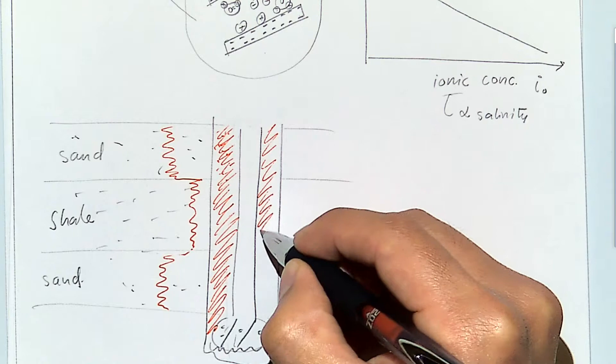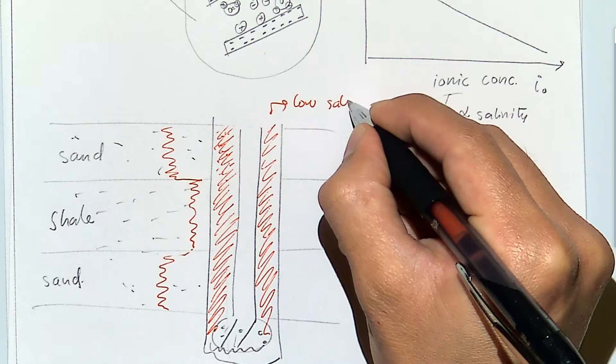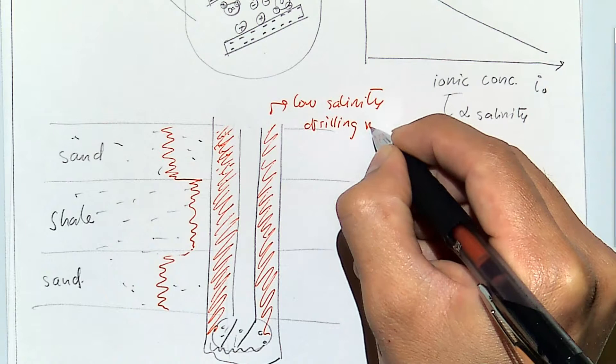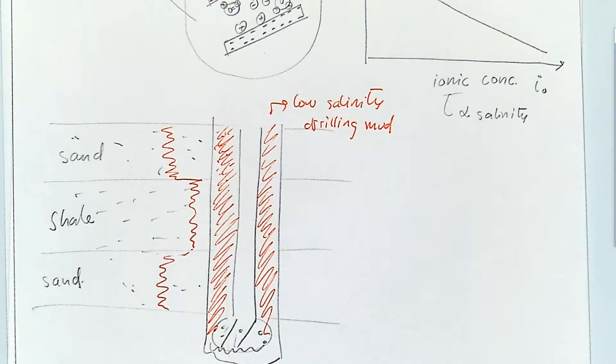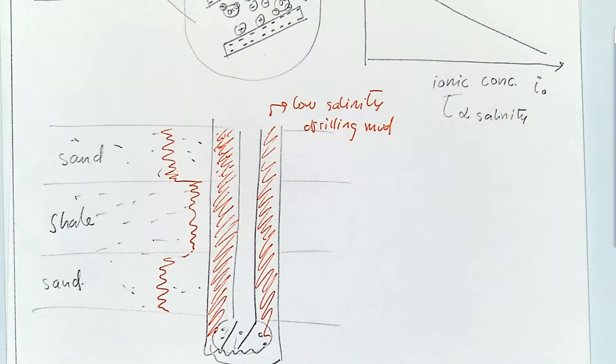This is low salinity drilling mud. Because the shale wants to expand but it's constrained, instead you get compression — an increase in compression. If you get more compression, let's say in the hoop direction, you may get shear failure because you'll have more compression in one direction and low compression in the other.